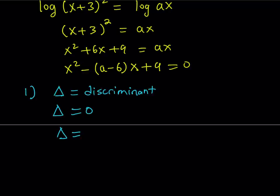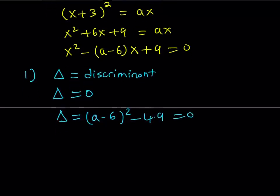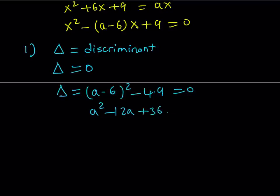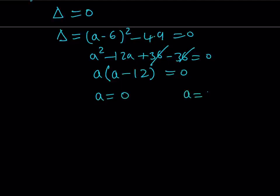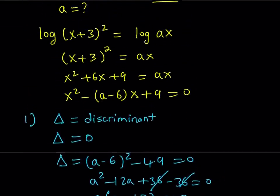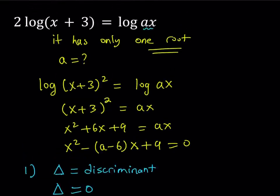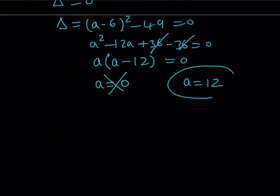Delta equals b² − 4ac = (a−6)² − 4·9 = 0. Expanding: a² − 12a + 36 − 36 = 0, so a² − 12a = 0, giving a(a−12) = 0. Thus a = 0 or a = 12. However, a = 0 makes log(ax) undefined, so we discard it. We keep a = 12, which gives the equation exactly one root.